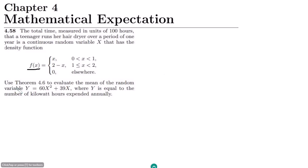We have to use Theorem 4.6 to evaluate the mean of the random variable y = 60x² + 39x, where y is equal to the number of kilowatt hours expended annually.